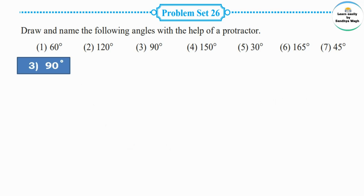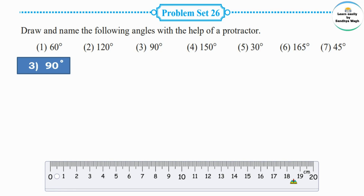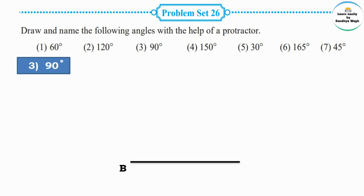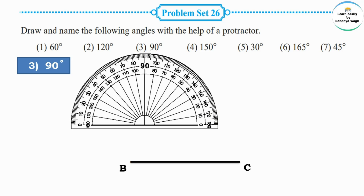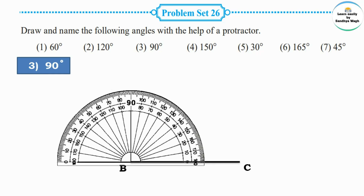The next measurement is 90 degrees. We need to draw a 90 degree angle. First draw a line with the help of a ruler and name this line BC. B is the point where we need to draw a 90 degree angle, and B is the vertex of this angle. Place the protractor with its center on point B and start counting from the right side.